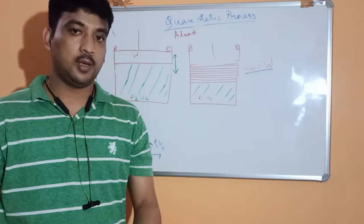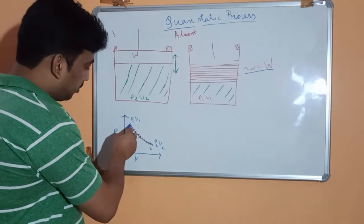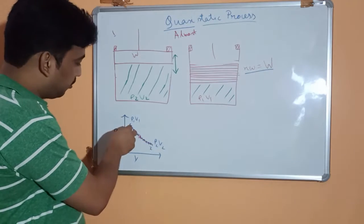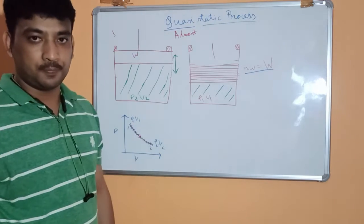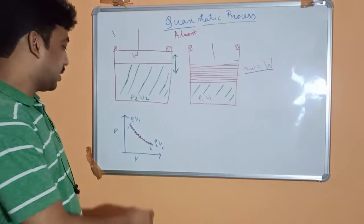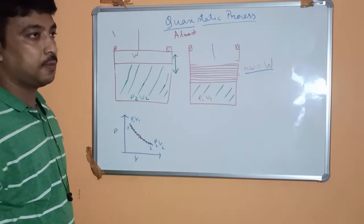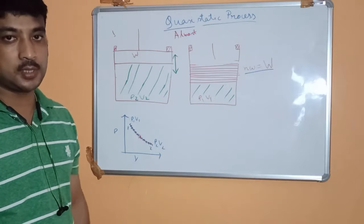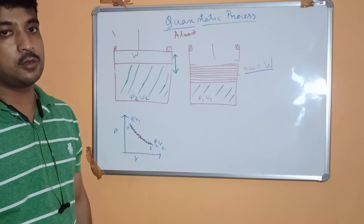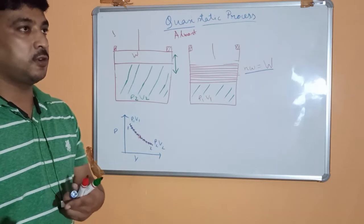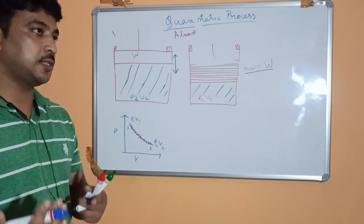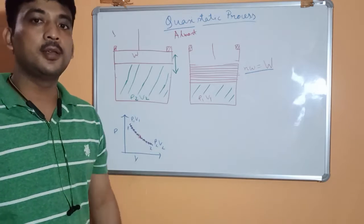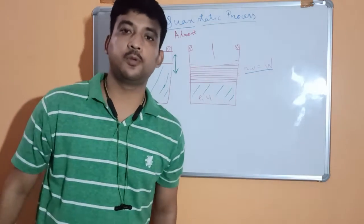For a process to be reversible, there must be infinite equilibrium points — it is easier to go one step at a time rather than make one long jump. Processes with infinite equilibrium points are called quasi-static processes, and a quasi-static process is also a criteria for a reversible process. Both are very difficult to find in nature.